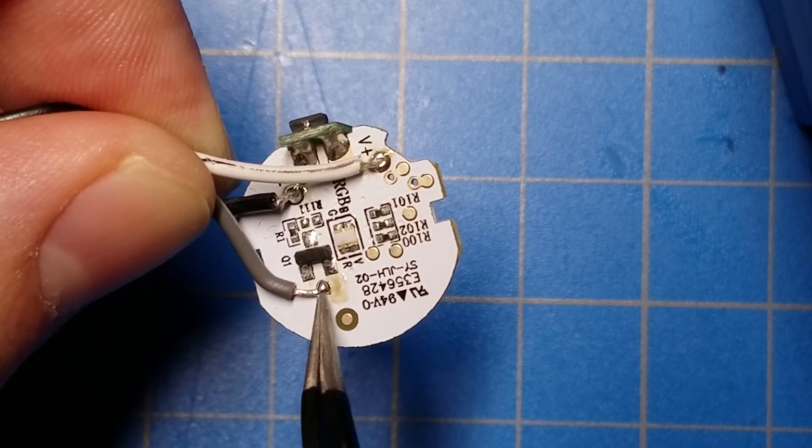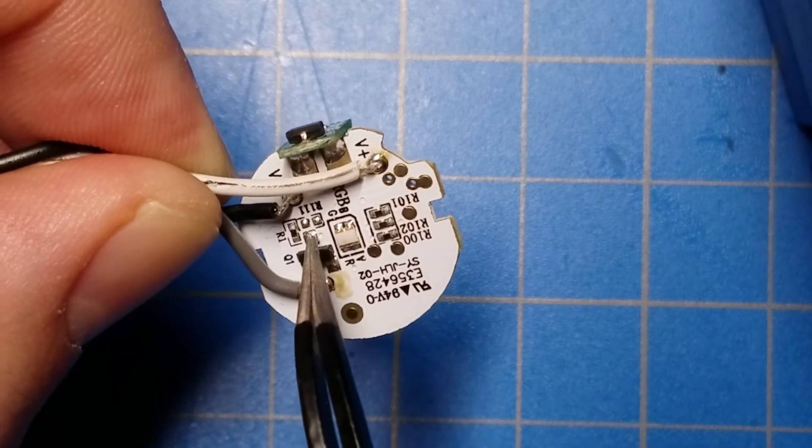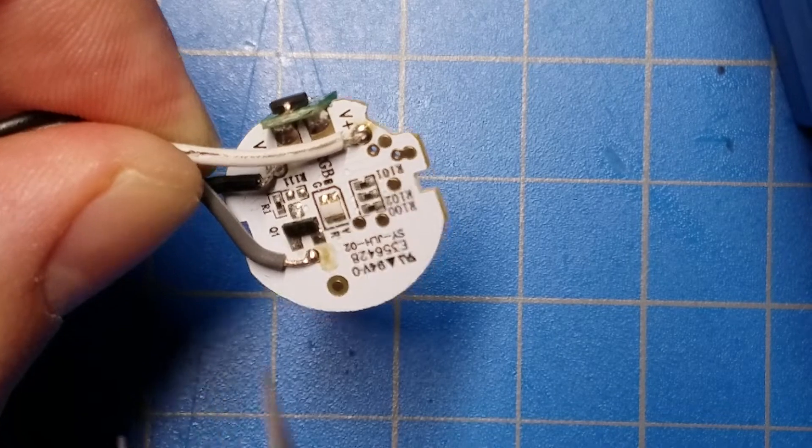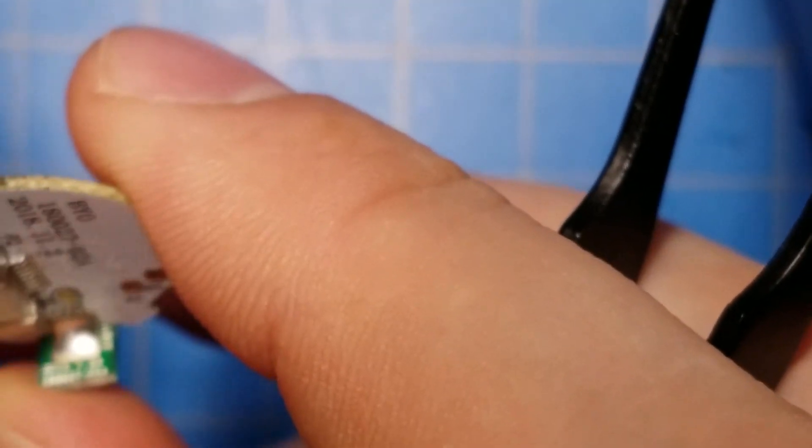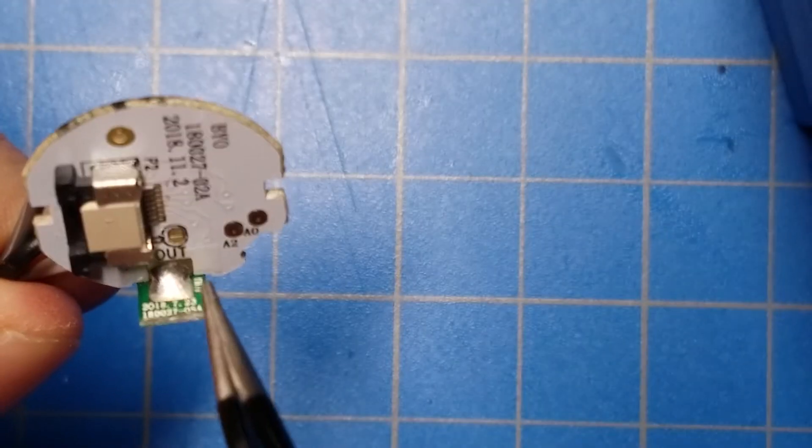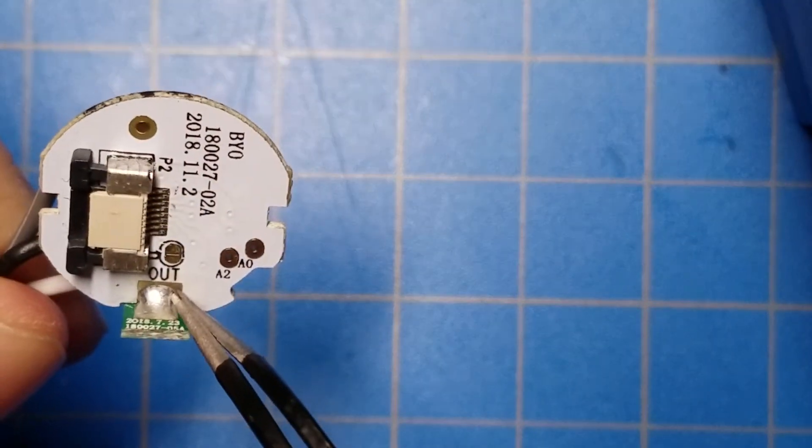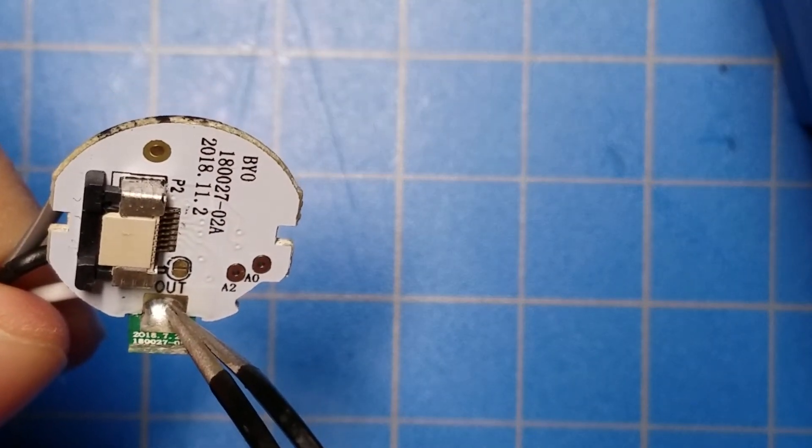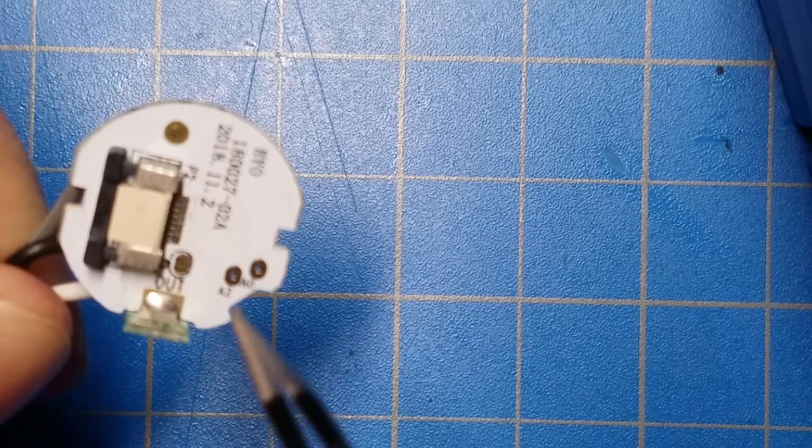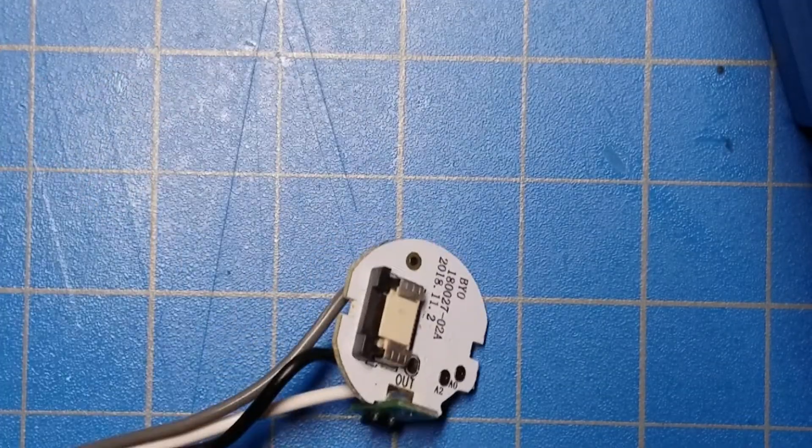wire to this test pad here, which again takes the output from that transistor. Or if you don't need to invert the signal, you can actually solder a wire directly here to where it says 'out'. Either way, that is